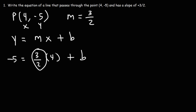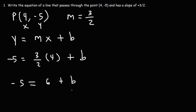So what is 3/2 times 4? To multiply a fraction by a whole number, we multiply 3 times 4 which is 12, then divide by 2 which gives us 6. So -5 is equal to 6 plus b. To get b by itself we subtract 6 from both sides. 6 and -6 cancel, so b = -5 - 6, which is -11.